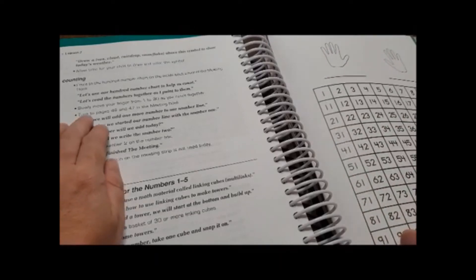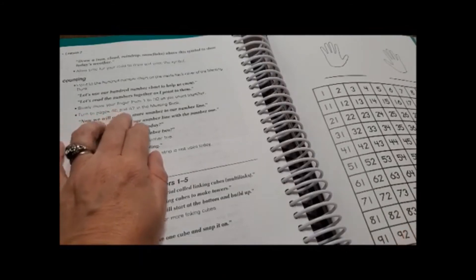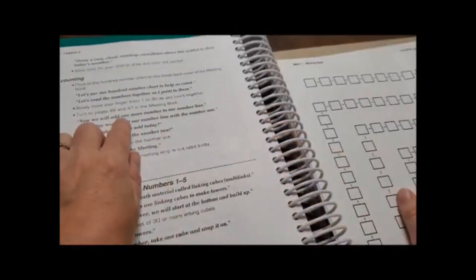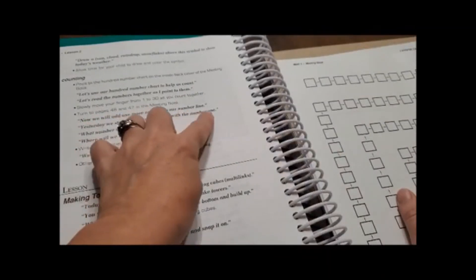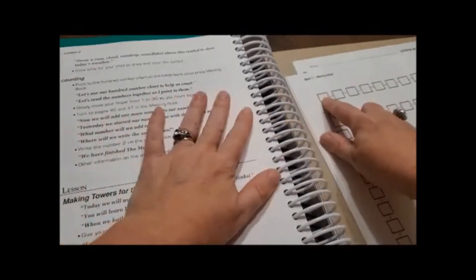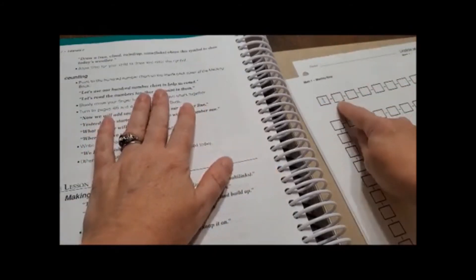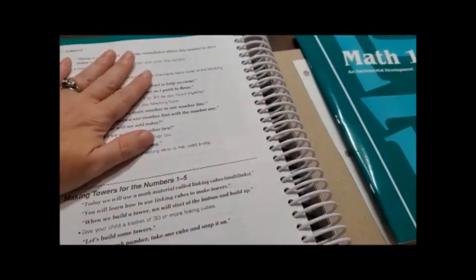Alright, so now it tells us to turn to the pages forty six and forty seven in our meeting book. So we go right here to forty six and forty seven in our meeting book. And now you will add one more number to each number line. So today we're going to put a one right here. There you go. And then so tomorrow we'll add what number? Two. Until eventually we go all the way around. Alright, so we're finished with our meeting book.